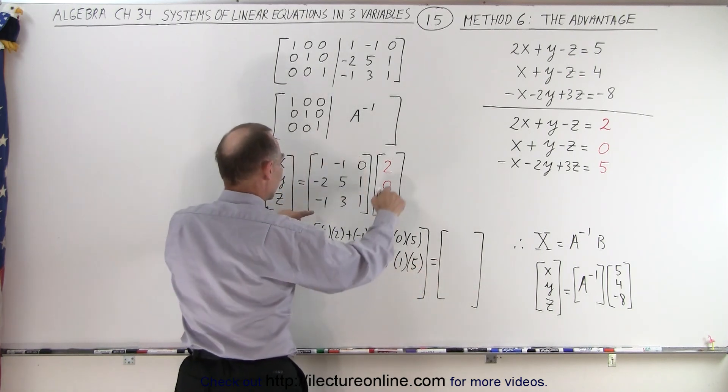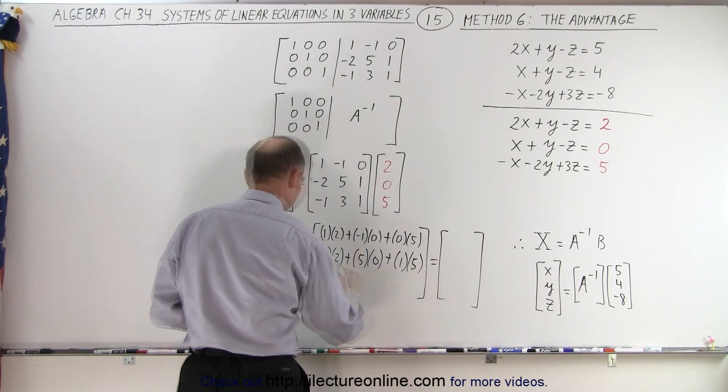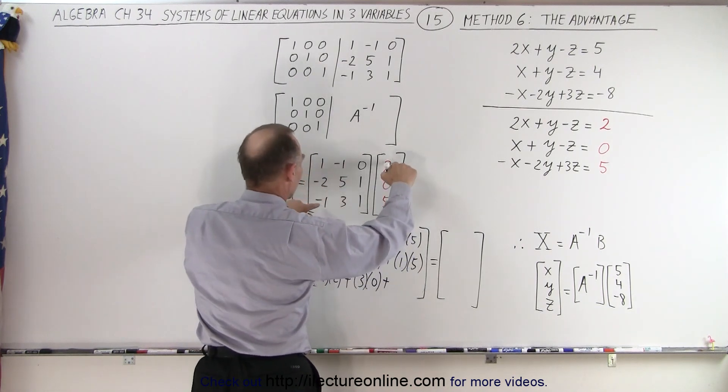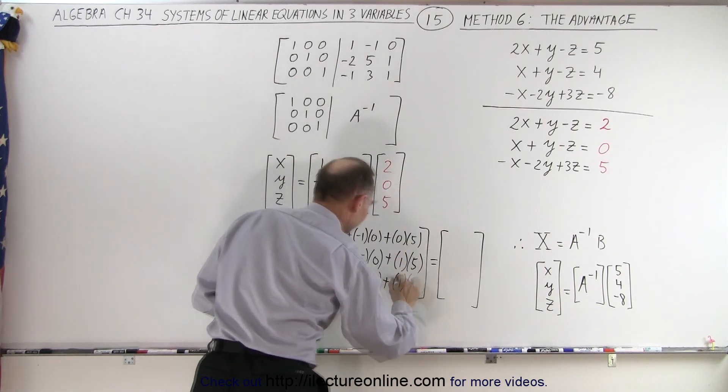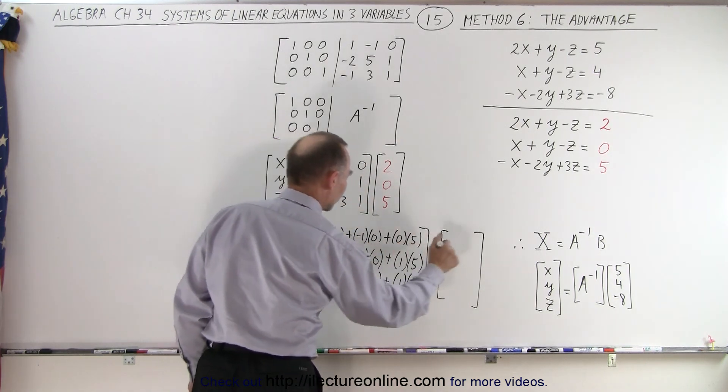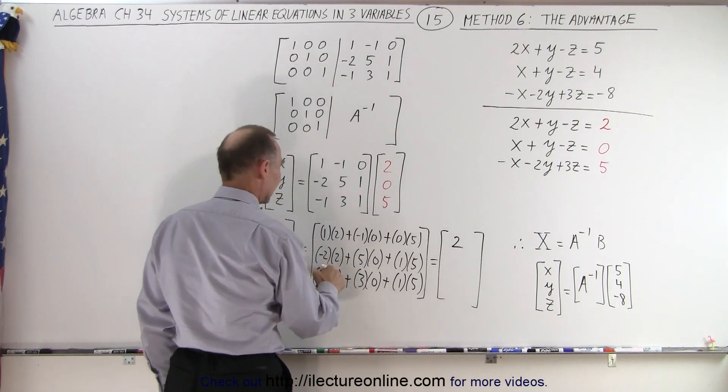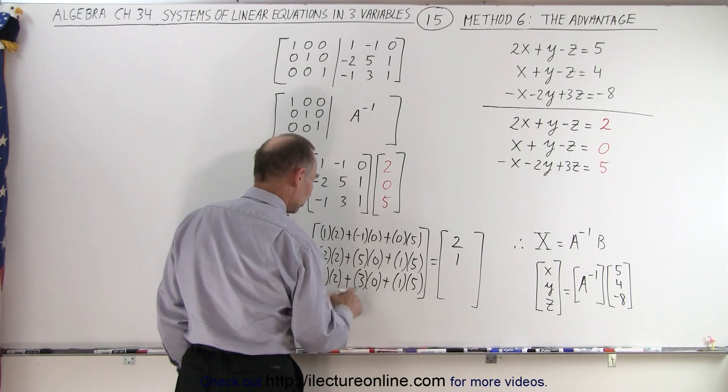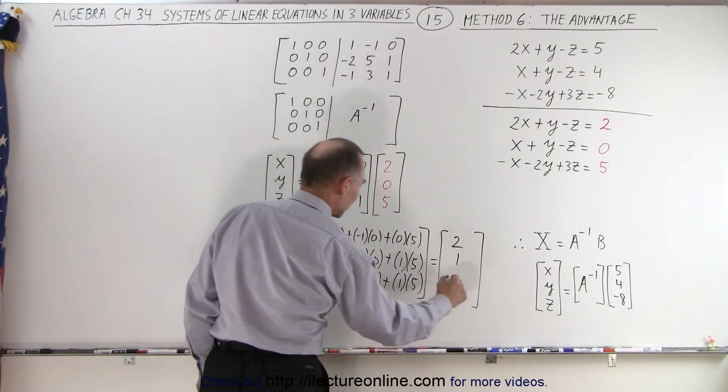And for the value for Z, I get negative 1 times 2 plus 3 times 0 plus 1 times 5. And for the X, we get 2 plus 0 plus 0, that gives me a 2. Negative 4 plus 0 plus 5, that gives me a plus 1. Negative 2 plus 0 plus 5, that gives me 3. And so the values for X, Y, and Z in this case are 2, 1, and 3.